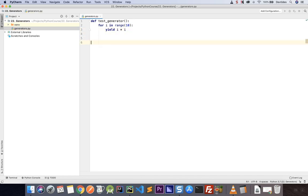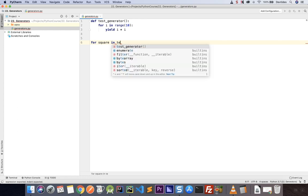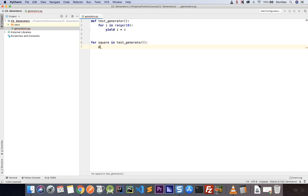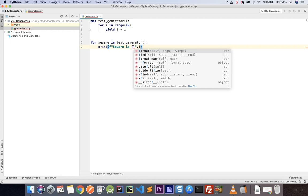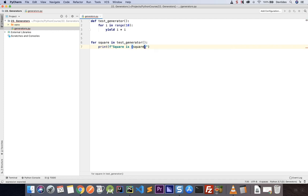So let's go ahead and use that as an iterator. I'm going to say for square in test generator, I'm going to print F string square is this number. Oh no, it's an F string, so we can put the square straight in the string. There we go.